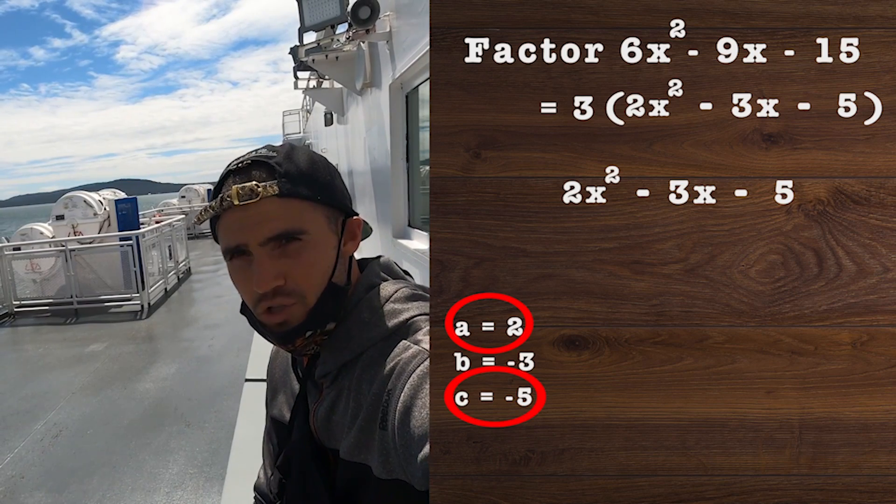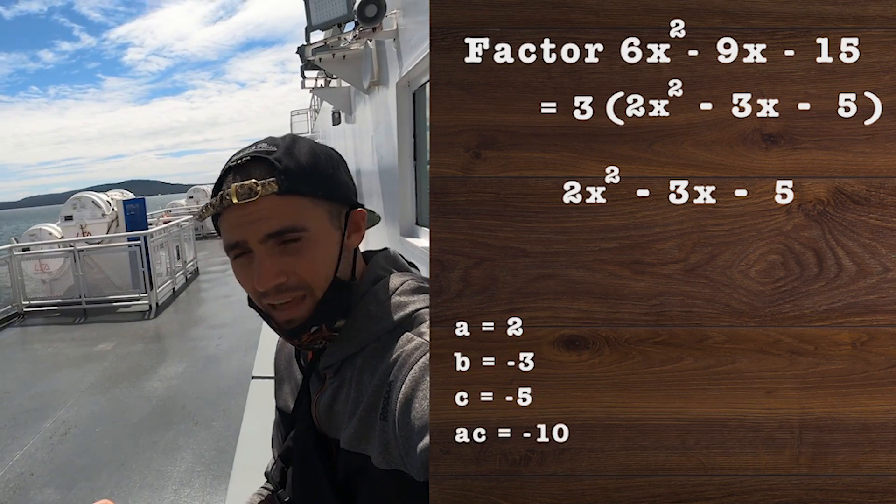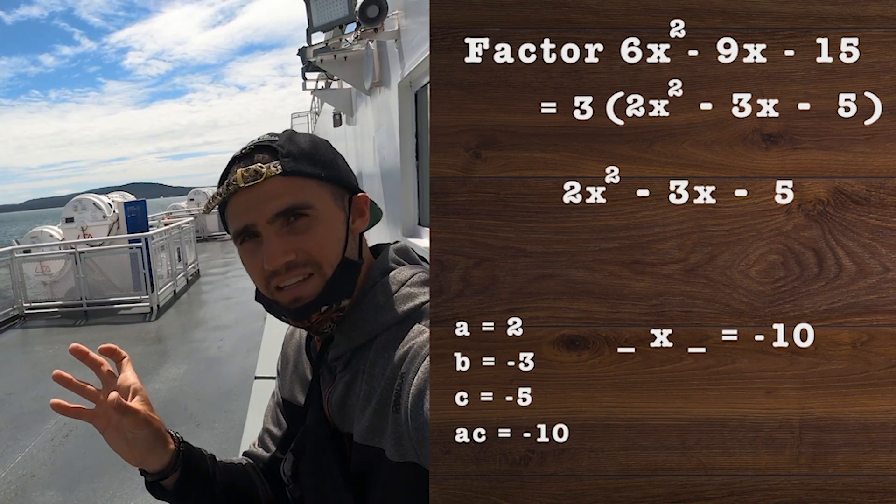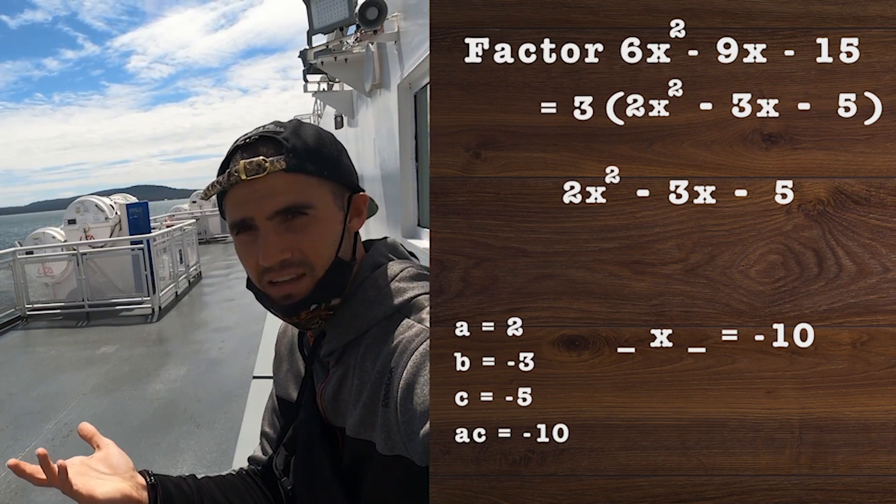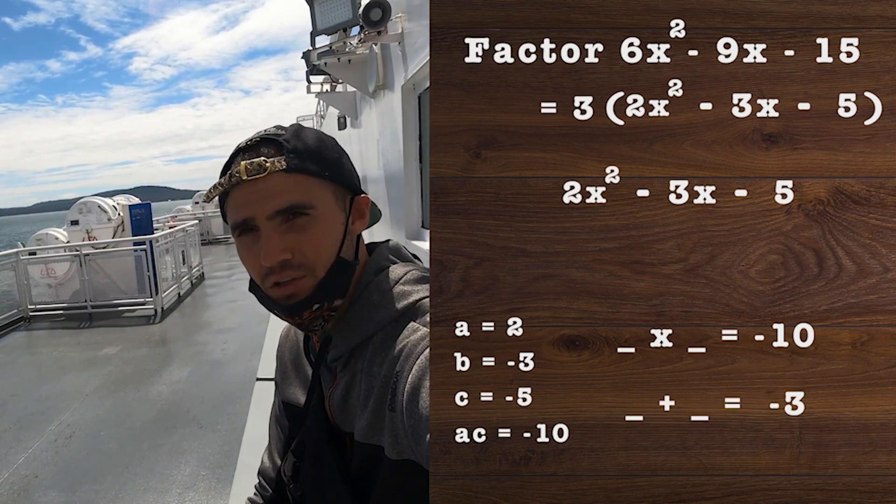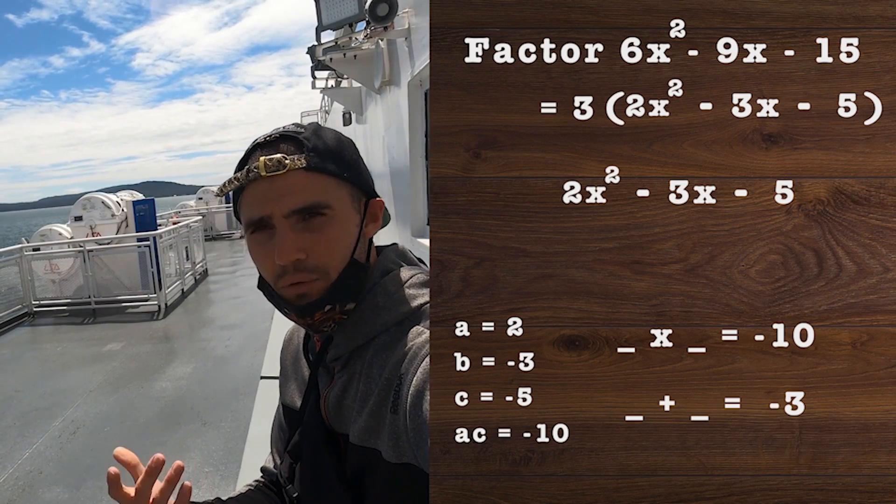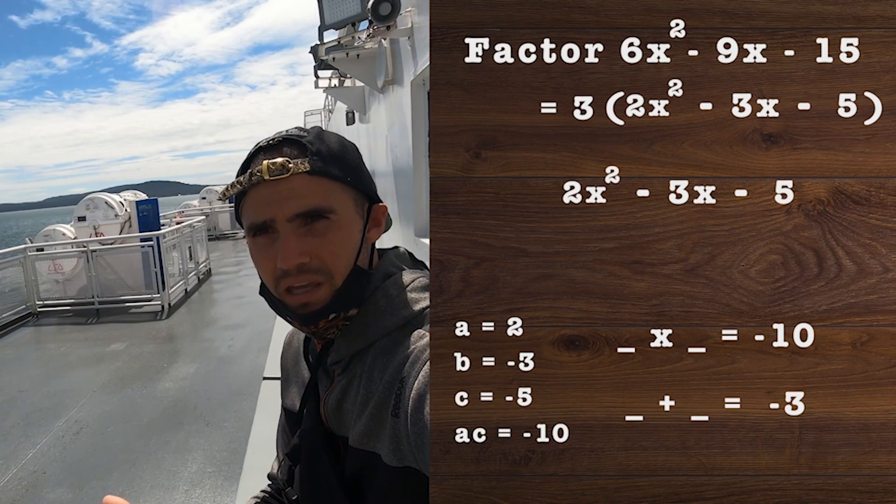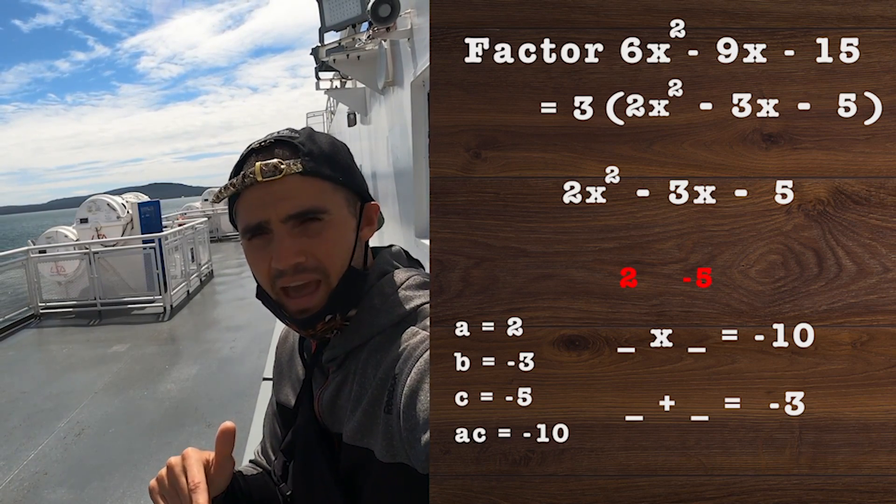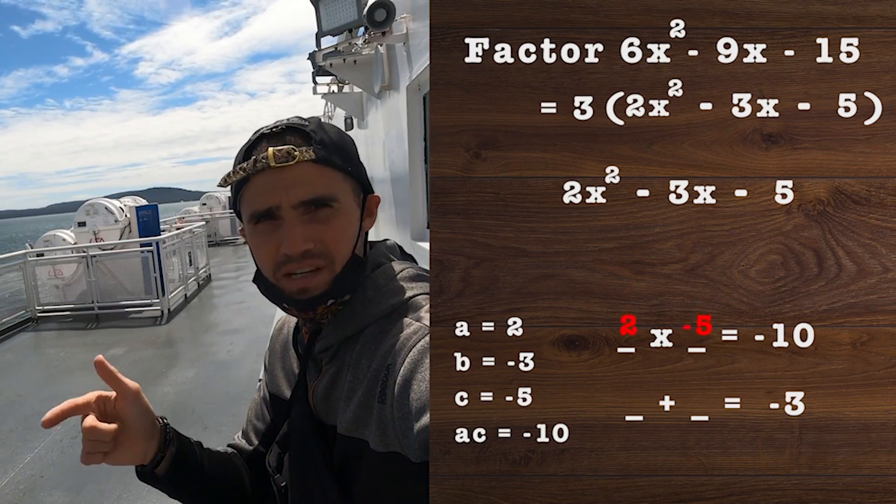Next, we take the a and c values and multiply them, which gives us -10. From there, we've got to find two numbers that multiply to that ac value of -10 and add up to the b value of -3.